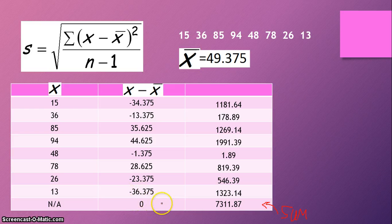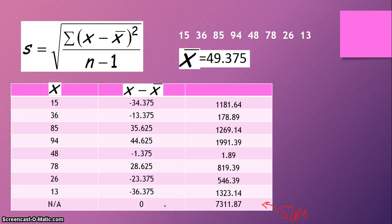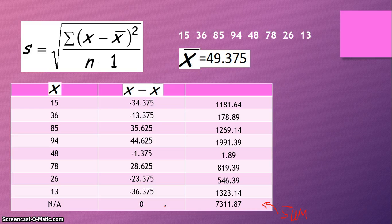And then of course this bottom, this bottom row is the sum of our middle column. And notice how it's zero. Important point to know. When you add all of your deviations together, at least your deviations from the mean, if you add them all together, they absolutely should equal to zero. If not, you've done something wrong, and you need to go back and check your calculations.